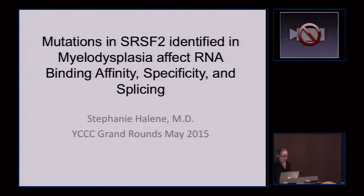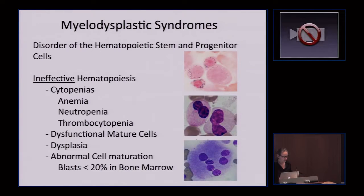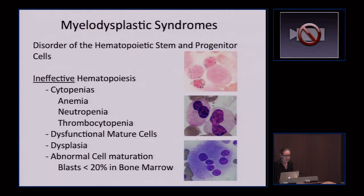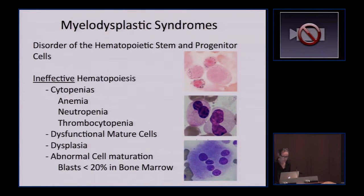I'll be telling you about mutations in SRSF2 and how they affect RNA splicing. Myelodysplastic syndromes are a disorder of the hematopoietic stem and progenitor cells, characterized by ineffective hematopoiesis, cytopenias with anemia, neutropenia, and thrombocytopenia, dysfunctional mature cells, dysplasia, and abnormal cell maturation. By definition, the blasts have to be less than 20% in the bone marrow. These pictures give a little idea of the dysplastic changes found in the bone marrow and peripheral blood.